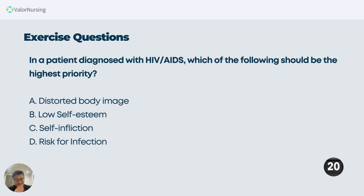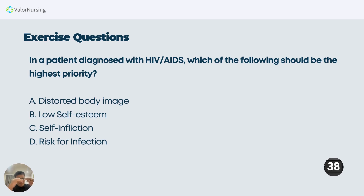Low self-esteem is at the fourth level. Letter C is self-infliction, and letter D is risk for infection. The best answer is not letter A or B — eliminate those. Distorted body image is at level four. Low self-esteem is also at level four. Self-infliction belongs to safety and security. Risk for infection, on the other hand, is part of your physiological need — it's part of your physiological priority. Hence, the best answer is letter D, risk for infection.